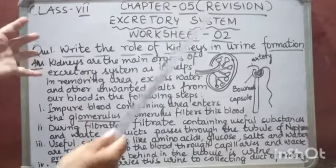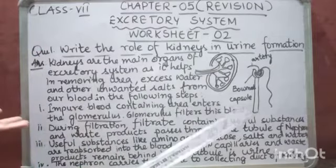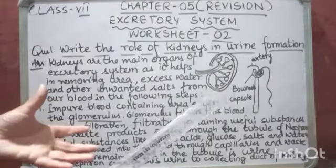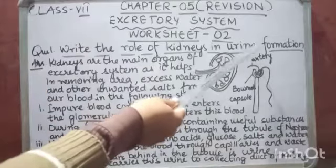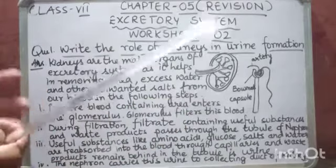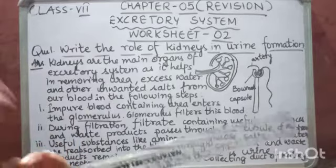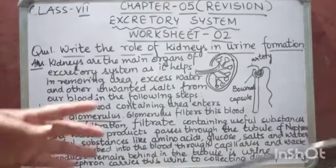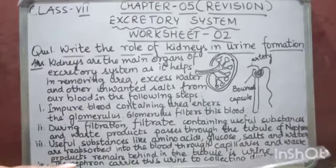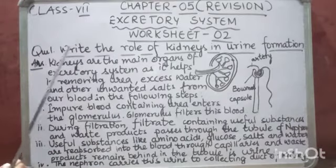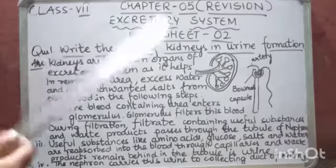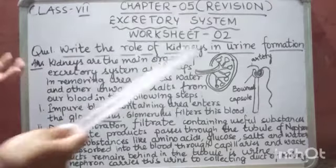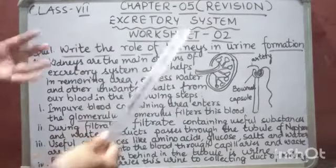Now here, we will discuss how kidneys remove urea from our blood in the form of urine. Urine is a yellowish liquid which contains urea and other unwanted waste products, and it is passed out from our body in the form of liquid. Now kidneys remove urea in the form of urine in the following steps.